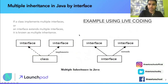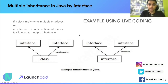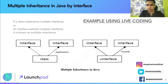Now let's answer the popular question: how are we able to do multiple inheritance via interfaces? If a class implements multiple interfaces, or an interface extends multiple interfaces, it is known as multiple inheritance. As shown in the diagram, a class implementing two interfaces or an interface extending two interfaces represents multiple inheritance in Java.